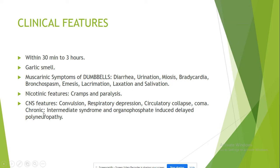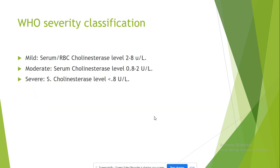There can also be nicotinic features such as cramps and paralysis. The patient can also have CNS features such as convulsion, respiratory depression, and cardiovascular collapse along with coma. Sometimes some patients develop chronic neurological features such as intermediate syndrome and organophosphate-induced delayed polyneuropathy.